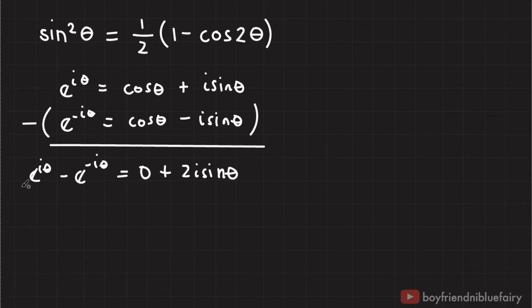Now I'll square both sides. I'll have e to the 2i theta, and I'll have minus e to the i theta times e to the negative i theta. This is e to the zero, which is one, so I'll just write one.